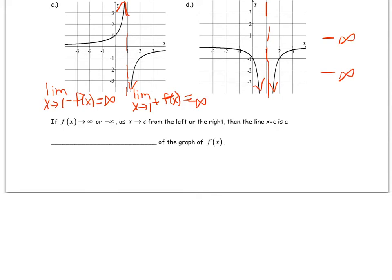So we have this statement right here that we used in Algebra 2 and in pre-calculus. If f of x is approaching infinity or negative infinity as x approaches c from the left or the right, then the line x equals c is a vertical asymptote, which we've already talked about.